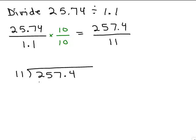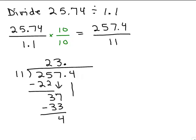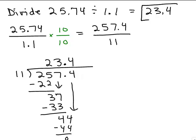You put the decimal up in the answer right away — that's how you know where to put it — and then do regular division. 11 into 25 goes twice. Bring down the next digit. 11 into 37 goes three times. Bring down the next digit. 11 into 44 goes four times with no remainder. So this actually has an answer of 23.4.